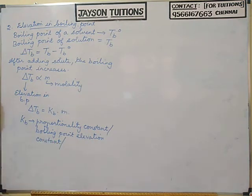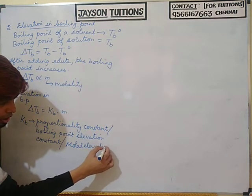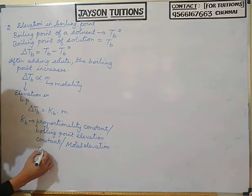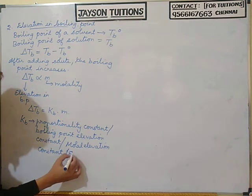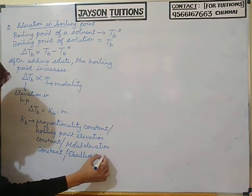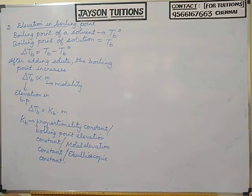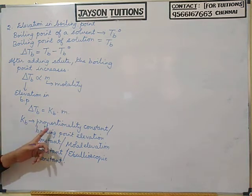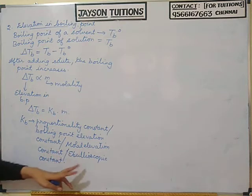Kb is also called the molal elevation constant, or the ebullioscopic constant. So Kb has three names: boiling point elevation constant, molal elevation constant, and ebullioscopic constant.